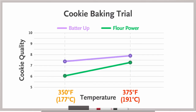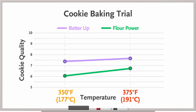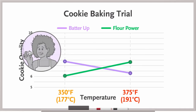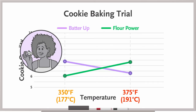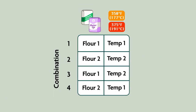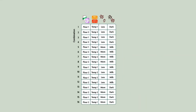Baking temperature is interacting with the type of flour. Had there been no interaction, you would expect parallel slopes. It's also possible for the lines to cross — that occurs when one factor has the opposite effect depending on the level of the other factor. You can imagine batter up is the clear taste winner at lower temperatures, but it leaves a burnt taste when exposed to higher temperatures. You could, of course, add a lot more factors: number of chocolate chips, types of chocolate, cookie size.